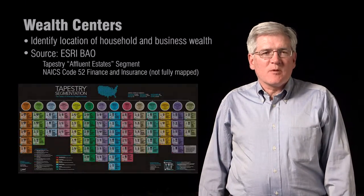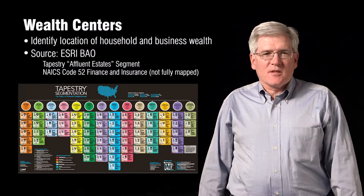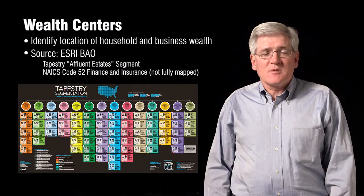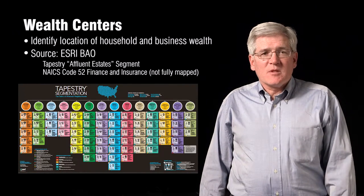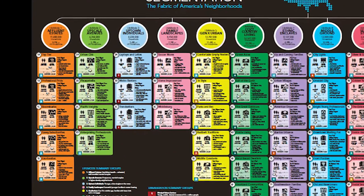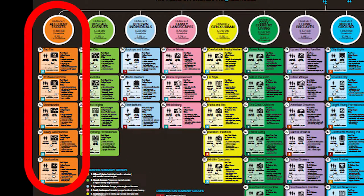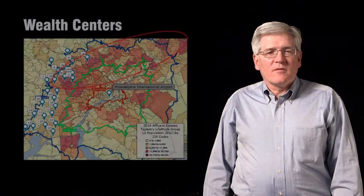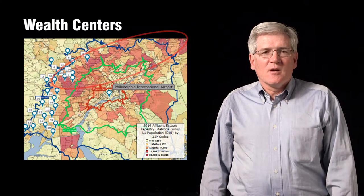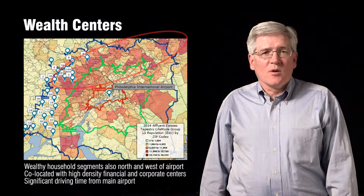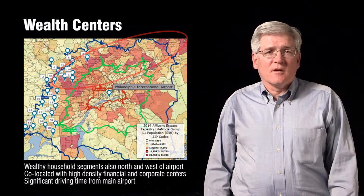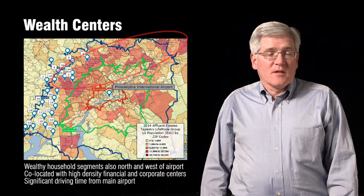To do this, I'm going to use the Tapestry dataset. This is a really interesting dataset that looks at demographics, population, wealth, income, types of jobs, types of mobility, residences — and in particular this group called the affluent estates on the left. This is the wealthiest group, and the premise is that these folks probably do the most travel and would be most interested in having this kind of service available to them. Looking again at the map of Philadelphia, north and west of the city, you see zip codes in red that have the highest density of affluent estates residents — that is an initial indicator.